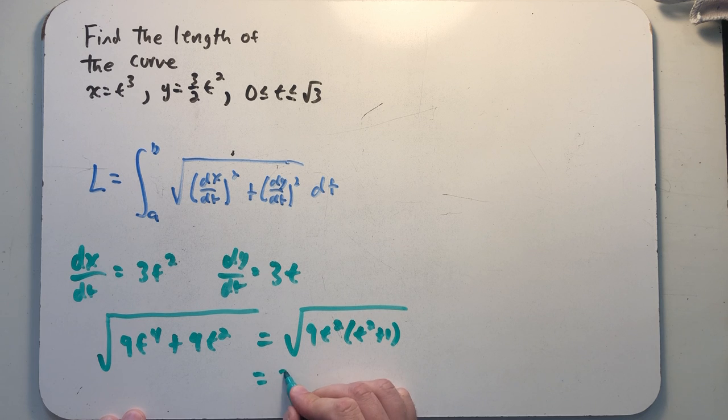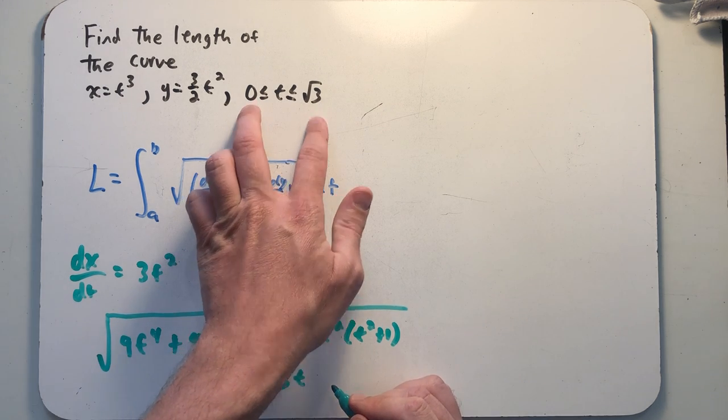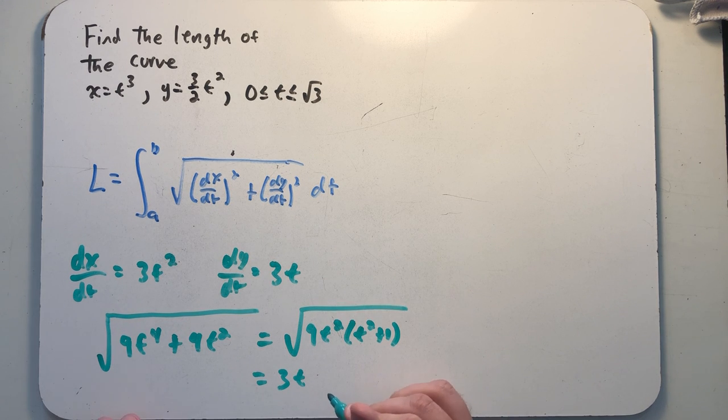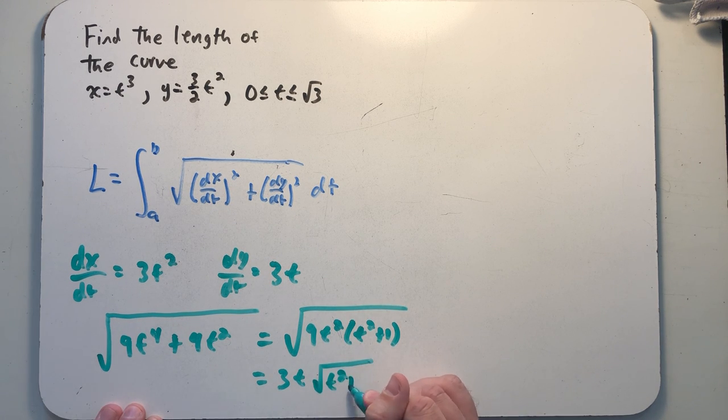And I could take a square root. I get 3 times technically the absolute value of t, but I know t is positive, so I can just write the t there. And then I'm left with t squared plus 1. And so there's my integrand.